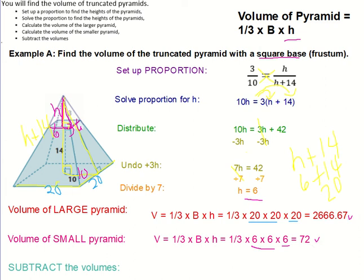From here, I'm going to subtract because I just want the volume of the truncated pyramid. I'm going to take these two values and subtract them. When I do the subtraction, I get 2,594.67. So there were a couple steps involved here, but in the end, we found the volume of our truncated pyramid.